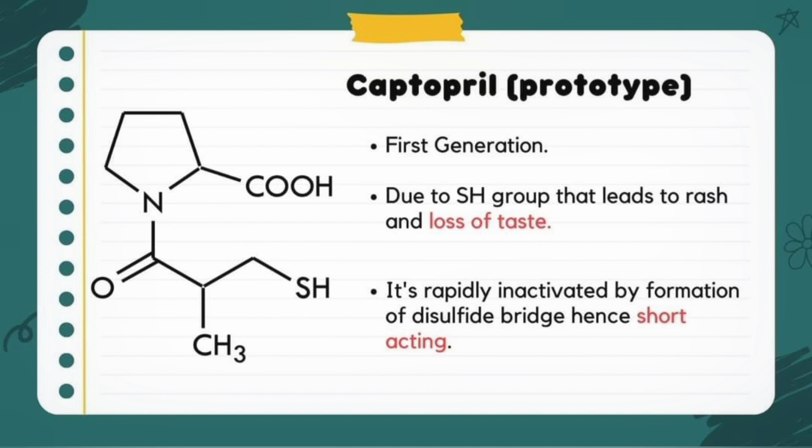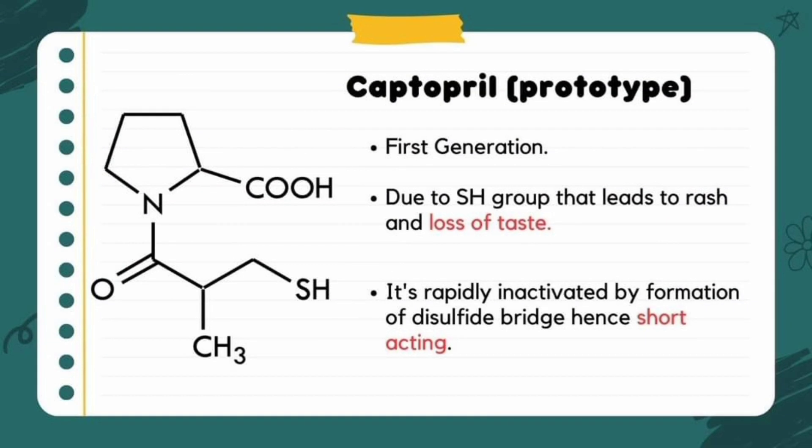Captopril is the prototype drug of the ACE inhibitor drug class. Captopril contains a sulfhydryl group, which contributes to rash and loss of taste with its use. It is rapidly inactivated by forming a disulfide bridge, so captopril has a shorter half-life.